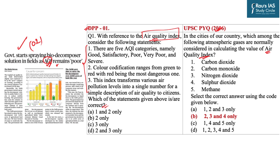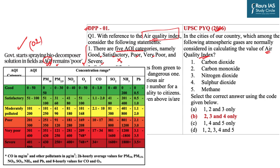Statement one says there are five AQI categories: good, satisfactory, poor, very poor, and severe. This statement is factually incorrect because there are not five but six AQI categories. The missing category — between satisfactory and poor — is 'moderately polluted.' So statement one is incorrect.